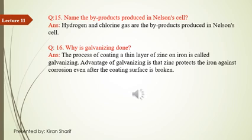Question number 16: why is galvanizing done? The process of coating a thin layer of zinc on iron is called galvanizing. The advantage of galvanizing is that zinc protects the iron against corrosion, even after the zinc coating surface is broken, because zinc is more reactive and acts as a sacrificial metal.